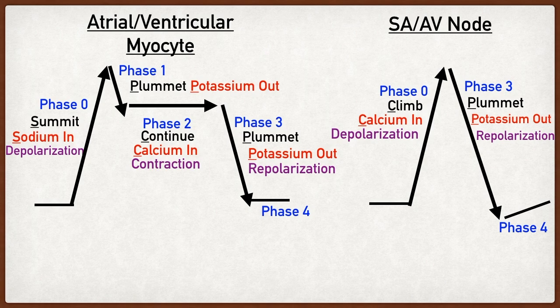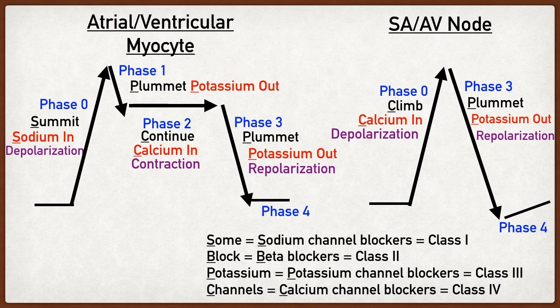There are four main class types of antiarrhythmics that you need to know, and the way to remember this is using the mnemonic 'Some Block Potassium Channels.' You use the first letter in each word to remember each class type. 'Some' helps you remember that sodium channel blockers are class one; 'Block' helps you remember that beta blockers are class two; class three are potassium channel blockers; and class four are calcium channel blockers.